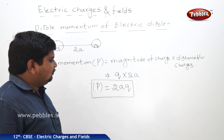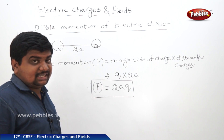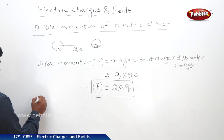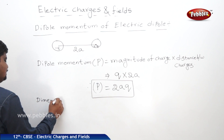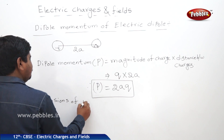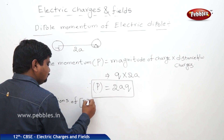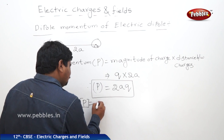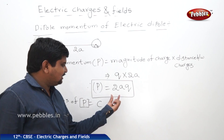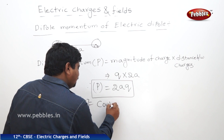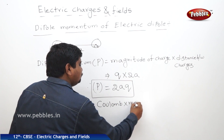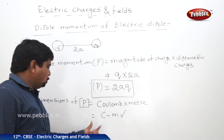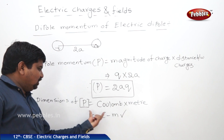This is one of the physical quantities in electrostatics or electric charges and fields. The dimensions of dipole momentum: 2a is distance and q is charge. The unit of charge is Coulomb and the unit of distance is metre, so the unit is Coulomb metre. The SI unit of dipole moment p is Coulomb metre.